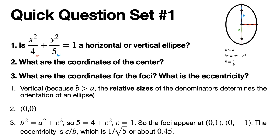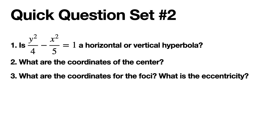Here's quick question set number two: Is y squared over 4 minus x squared over 5 equals 1 a horizontal or vertical hyperbola? — it's a hyperbola because of the minus. What are the coordinates of the center? What are the coordinates of the foci? What is the eccentricity?